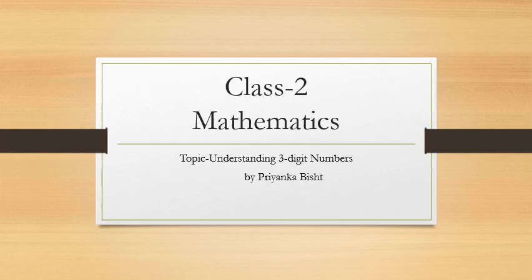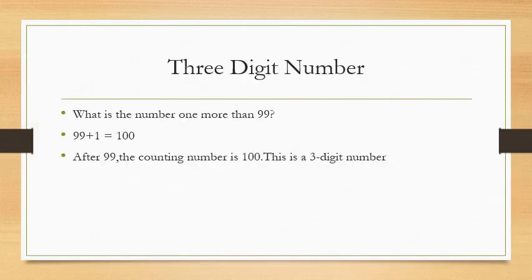Hello children, this video is for Class 2, subject Mathematics, topic: Understanding Three-Digit Numbers. I am your maths teacher Priyanka. Children, can you tell me what is the number one more than 99? When one is added to 99, the sum is 100. So children, after 99 the counting number is 100, and this is a three-digit number.